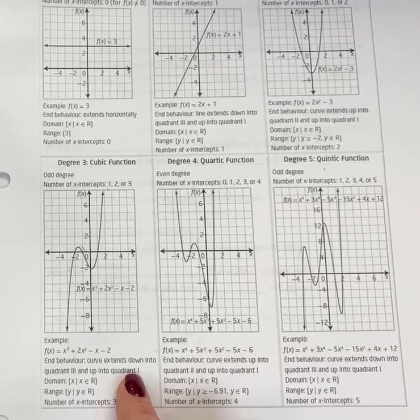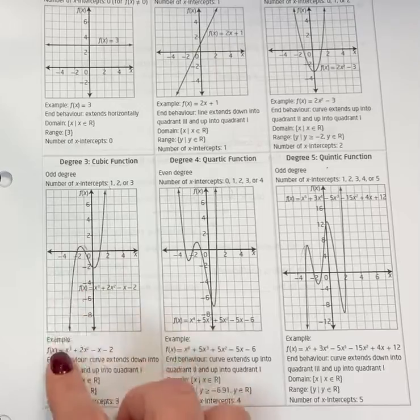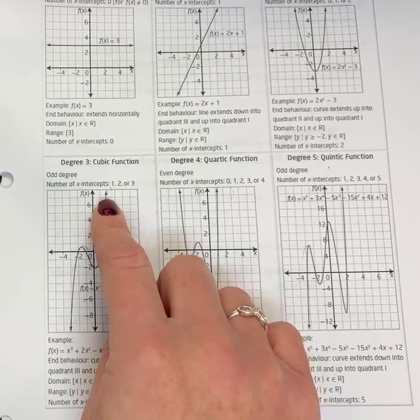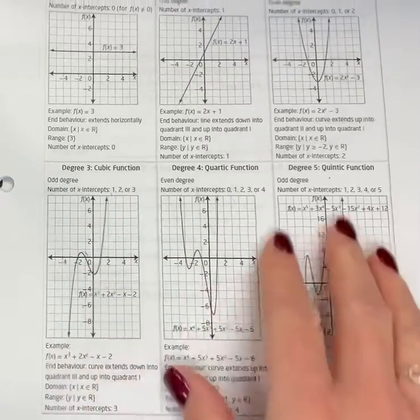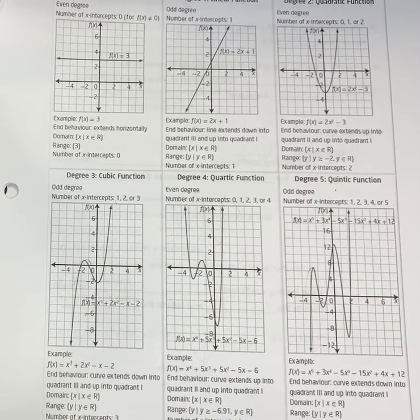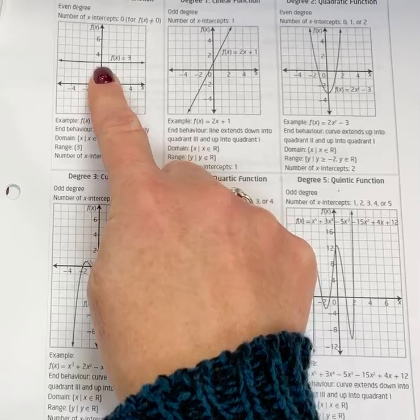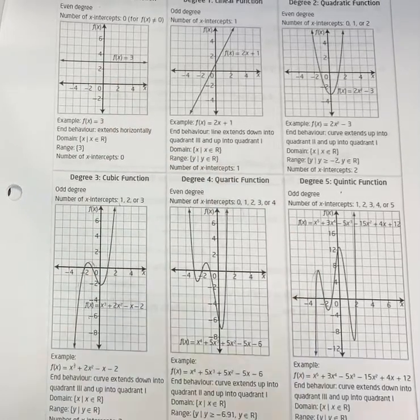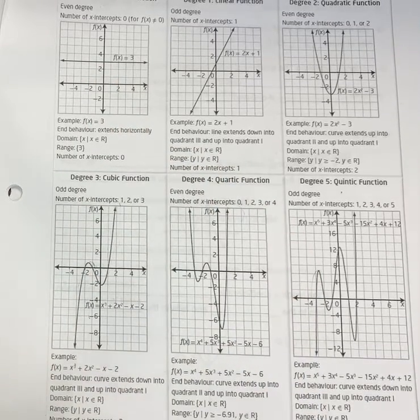The domain is x is all real numbers, and that's fine. The range is also y is all real numbers, with the exception of our constant term. So domain and range is pretty straightforward. The other thing we look at sometimes is how many times it changes direction—we call that the number of turns.